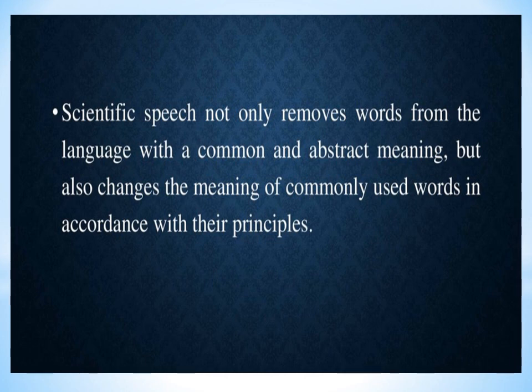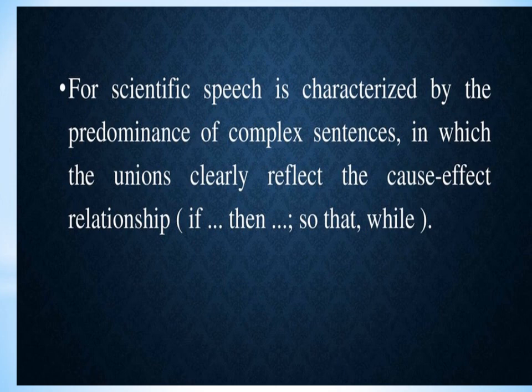Almost every word in a scientific text means not something concrete but a general concept or an abstract phenomenon. For example, 'birch will tolerate frost' — the word 'birch' here refers to a tree species, not a single or particular object. Scientific speech not only uses words from the language with a common and abstract meaning but also changes the meaning of commonly used words in accordance with its principles. In the scientific literature, especially where mathematical methods are applied, the future tense form is essentially devoid of its usual grammatical meaning and grammatically weakened. Scientific speech is characterized by the predominance of complex sentences in which conjunctions clearly reflect cause-effect relationships: if, then, so that, well.